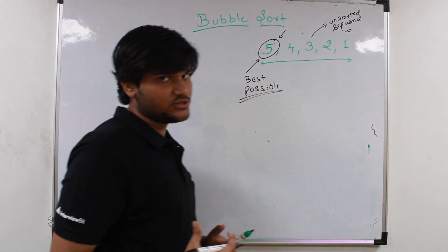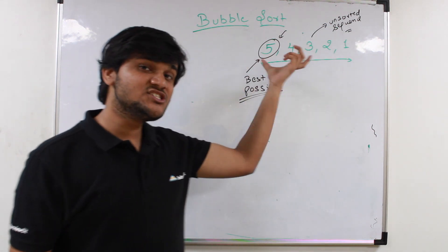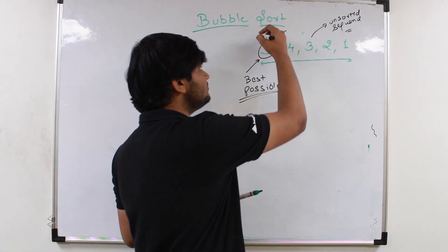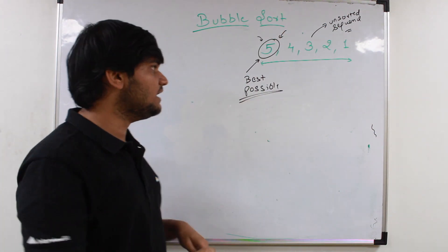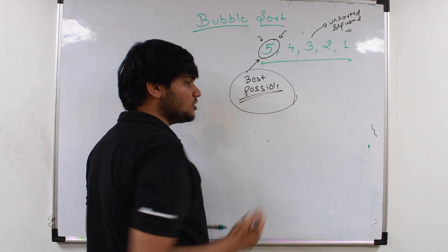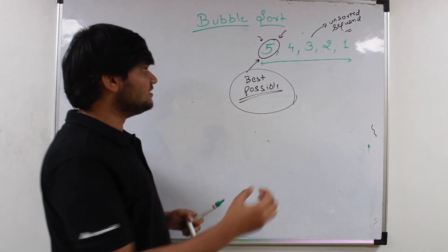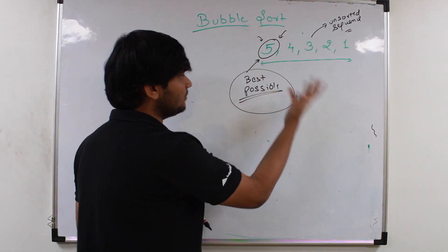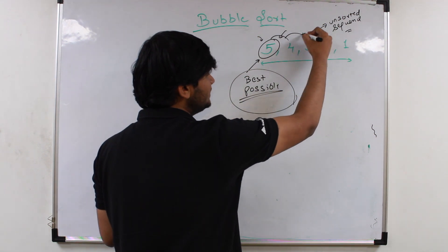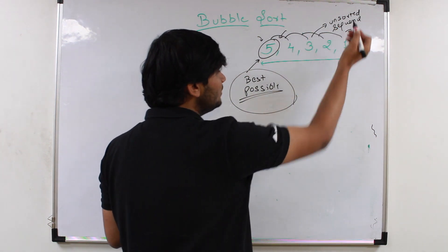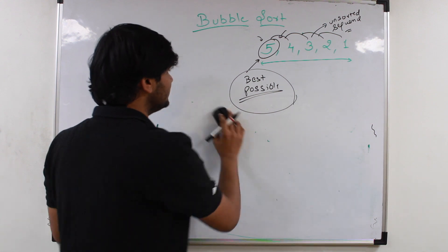So what bubble sort will ensure is that after each iteration, whatever the unsorted part is left, we will just make sure that the maximum of that unsorted part is going towards its best possible position after every iteration. It will just bubble up — it will just try to make sure that these integers are getting bubbled up to the best possible positions in the sorted sequence.